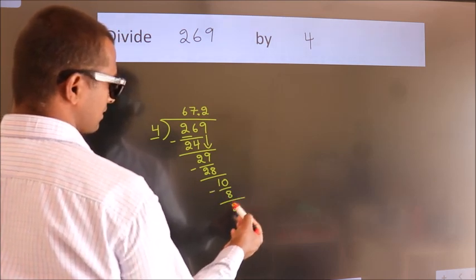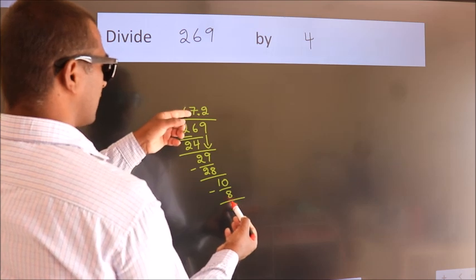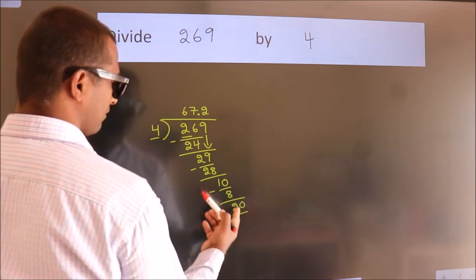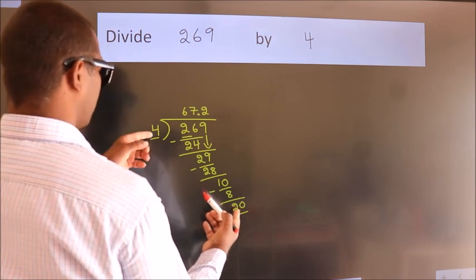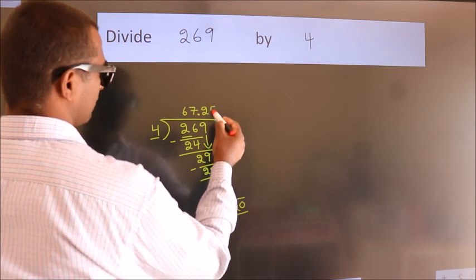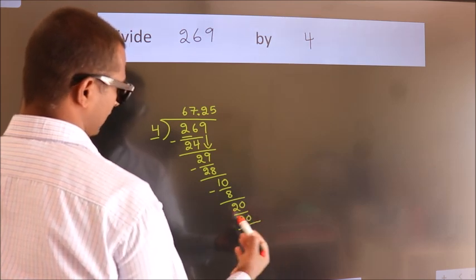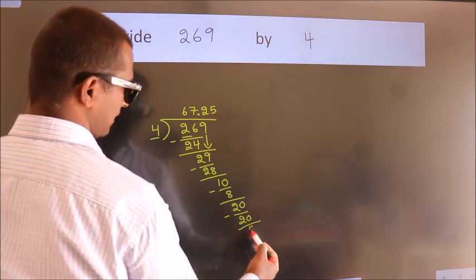After this, we already have the decimal, so directly take 0, giving us 20. When do we get 20 in the 4 table? 4 times 5 equals 20. Now we subtract and get 0.